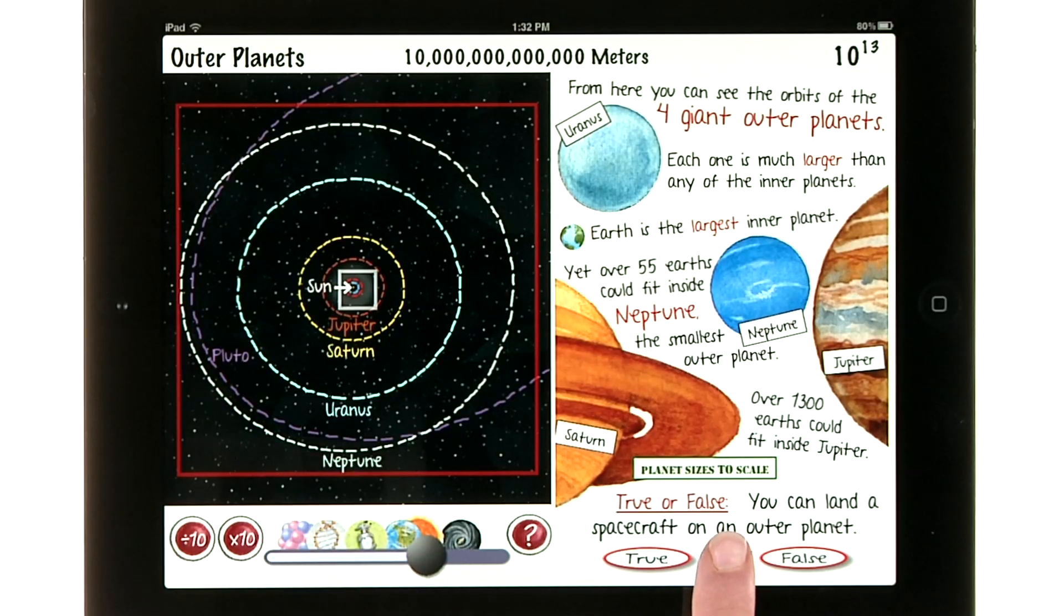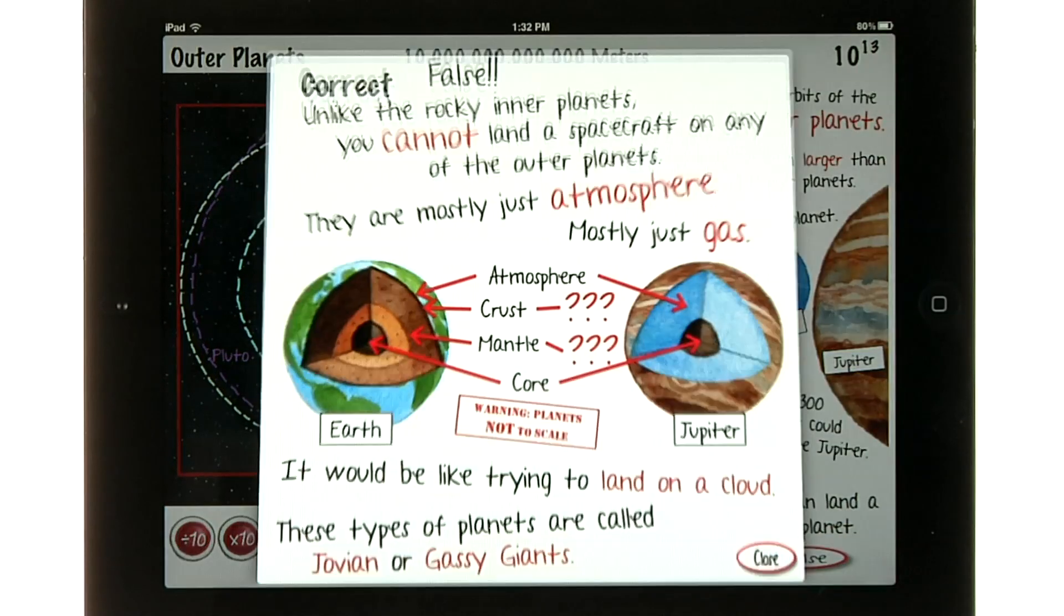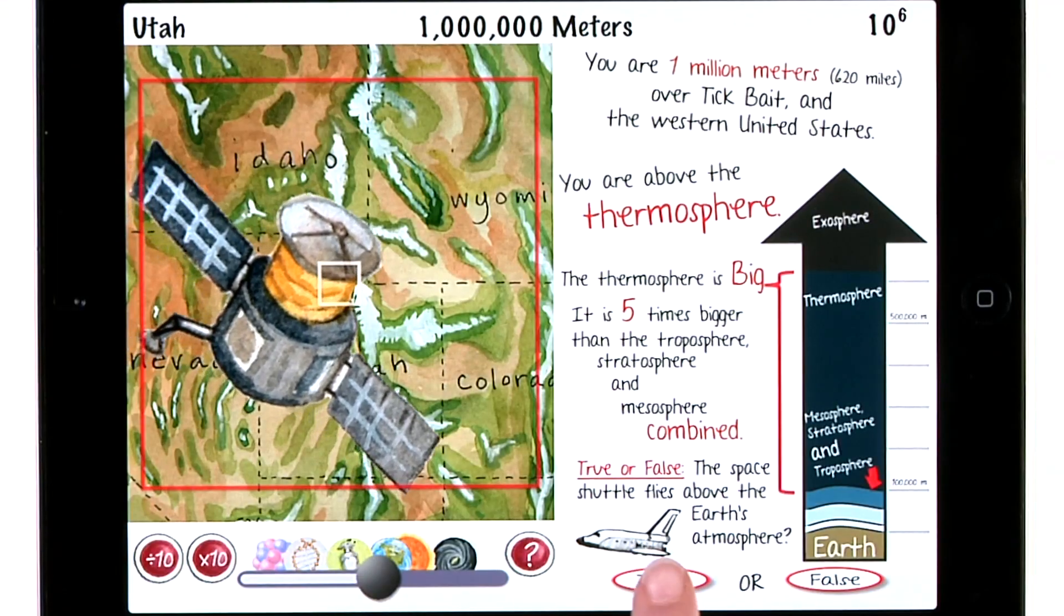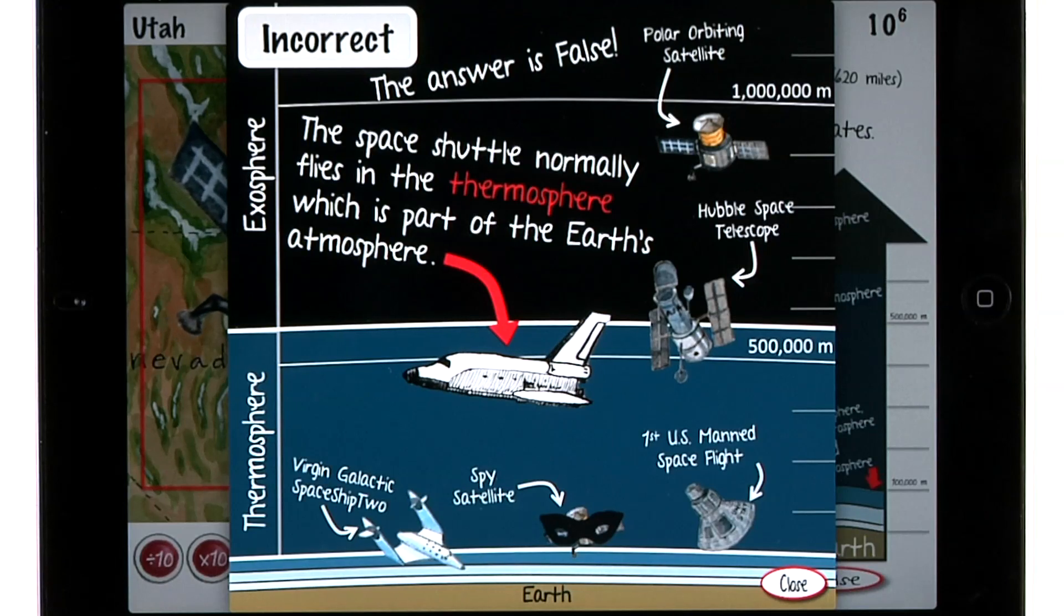Notice the question at the bottom of each page. This one asks if you can land a spacecraft on one of these outer planets. We discover that you can't because these outer planets are mostly just gas. These questions challenge kids and spark their curiosity.